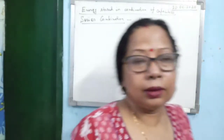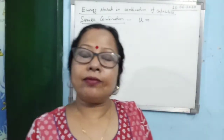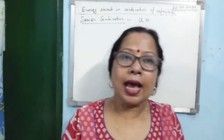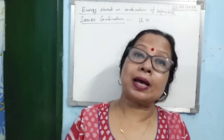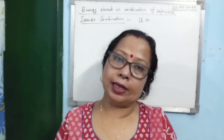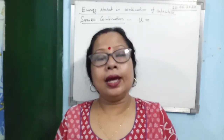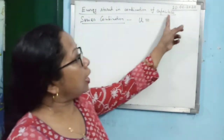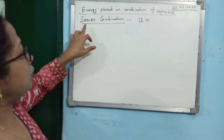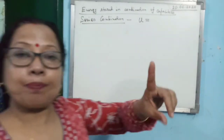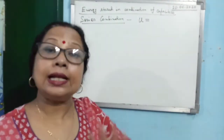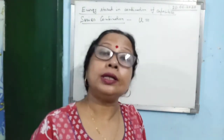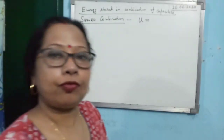Good morning children. We have already done the energy stored in a capacitor and the equivalent capacitors for series and parallel combinations. Now what will be the energy stored in a combination of capacitors? Instead of one capacitor, if you take several charged capacitors and join them together, what will be the total energy stored? That is what we will find out.